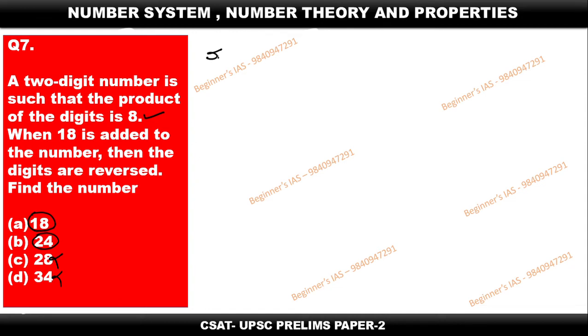After eliminating we need to identify. See 18 and 24, here it is given that when this number is added with 18, the number is getting reversed, which means that the original number is 18 when it is added with 18.